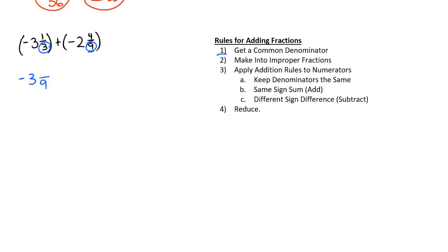We multiply 3 by 3 to get 9, so we get negative 3 and 3 ninths, plus negative 2 and multiply by 1. Multiply by 1, so it doesn't change, it's the exact same. Next, I want to convert these into improper fractions.